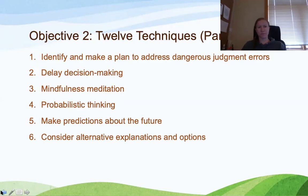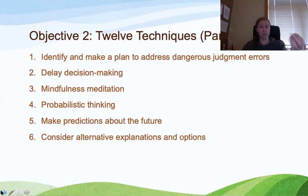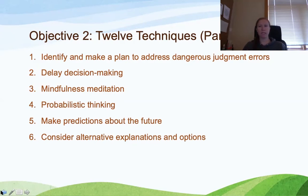Probabilistic thinking is a strategy in which you identify the likelihood of an outcome happening or not happening. What is the probability that if I were to do this, the outcome would be X versus Y? Just because you do something and think it will have a positive outcome doesn't mean that outcome is 100% guaranteed. Based on your history and previous decisions, you probably have some reference point regarding the probability of this decision having the intended consequence.